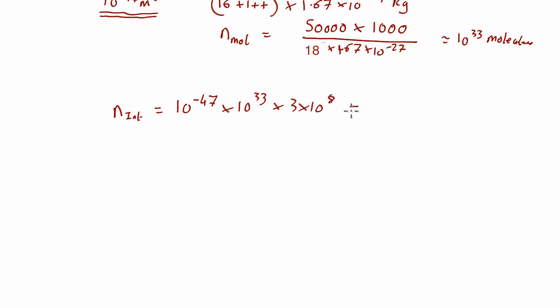Which, unfortunately, comes out as a very small number, 5 × 10⁻⁶ interactions. So what that's telling us is that 50,000 tonnes of water is nothing like enough to actually pick up neutrinos from a supernova in the Virgo cluster.